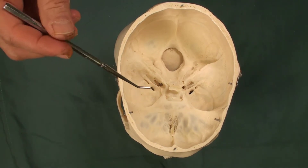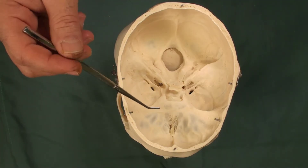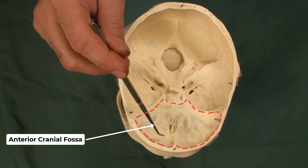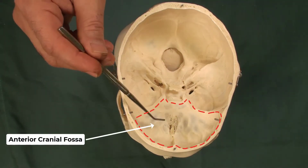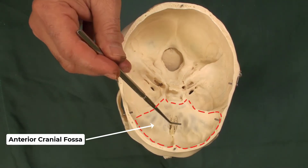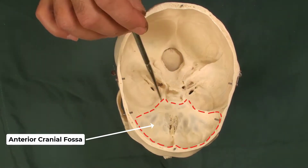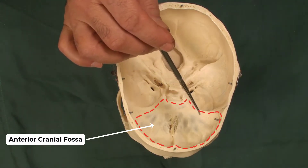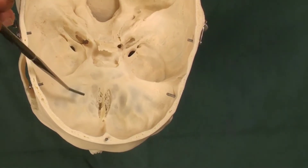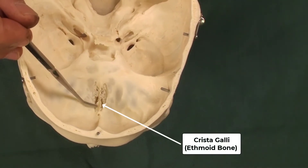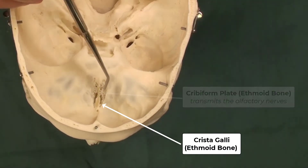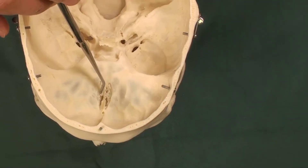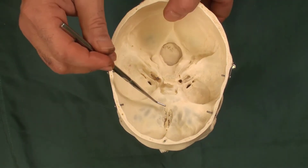Now in regards to the cranial cavity, there are three fossae at the base of the skull. The anterior cranial fossa is between the frontal bone and the posterior border of the lesser wing of the sphenoid bone. In this fossa, we can see the crista galli of the ethmoid bone and the cribriform plate of the ethmoid bone on each side of the crista galli.